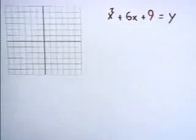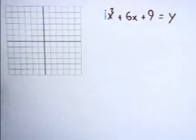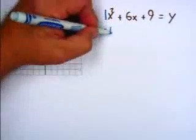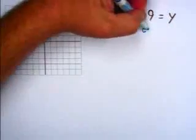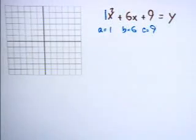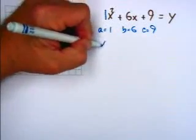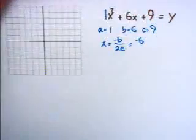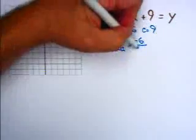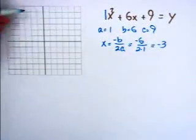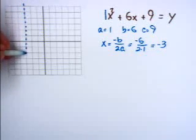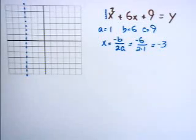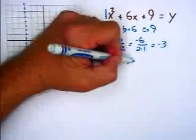Here's our second example, and once again the coefficient of the squared term is 1. So we have a equals 1, b equals 6, c equals 9. When it's time to find the vertex, we start by finding the line of symmetry, which is half the vertex: x equals negative b over 2a. In this case, that's negative 6 over 2 times 1, which is negative 3. So the line of symmetry is again at negative 3 — not that it's always negative 3, just happens to be so for the two examples I picked.